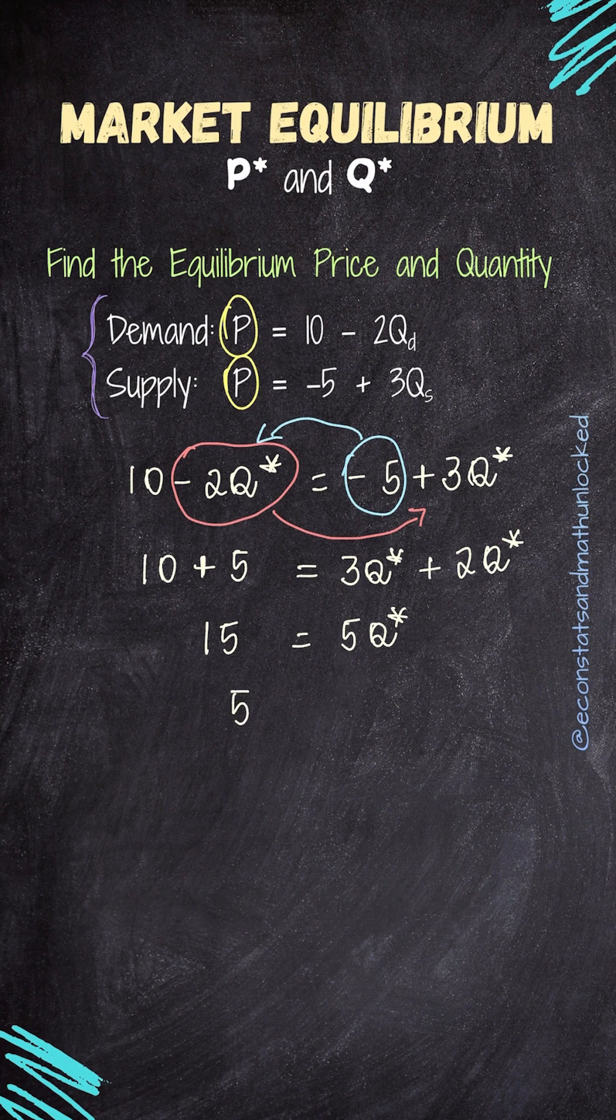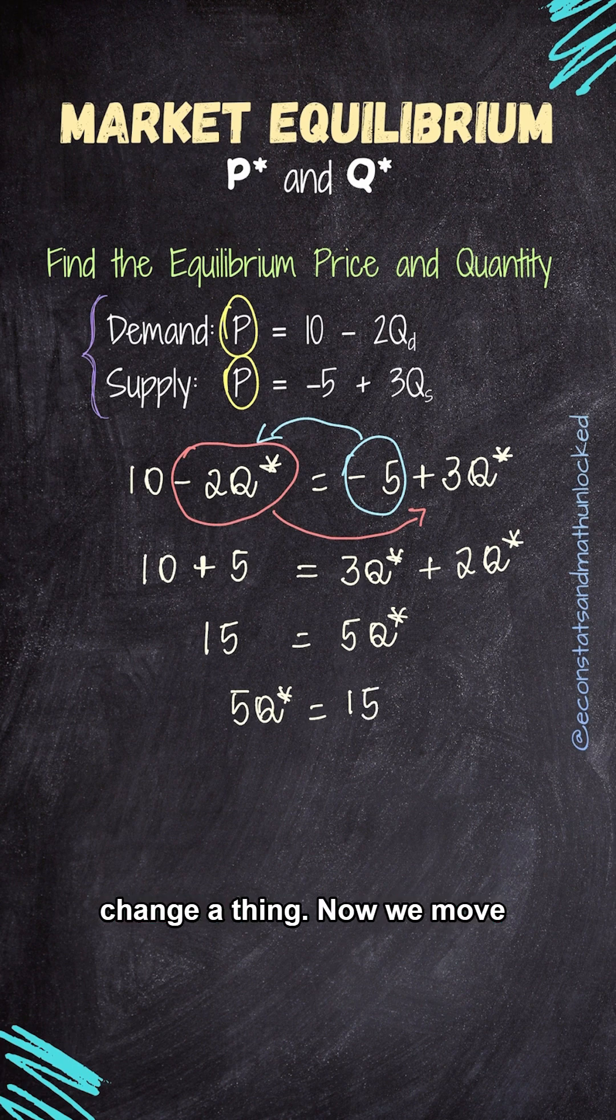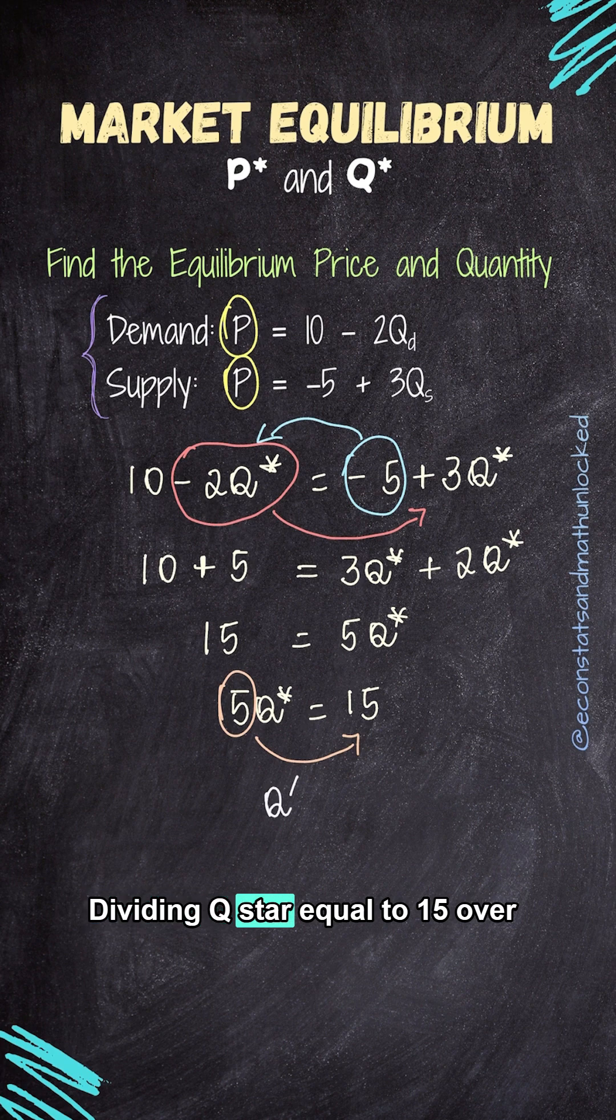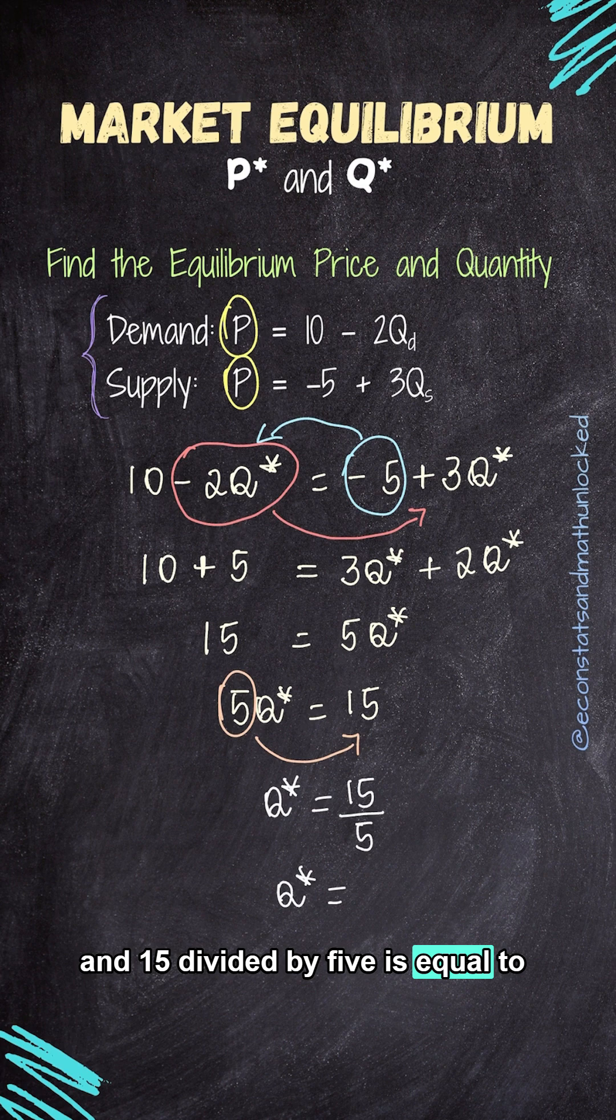I'll just flip them around. 5Q star equals 15. Doesn't change a thing. Now we move the 5 to the other side. It's multiplying so it passes over dividing. Q star equal to 15 over 5. And 15 divided by 5 is equal to 3. Then the equilibrium quantity is equal to 3 units.